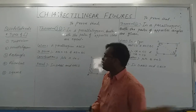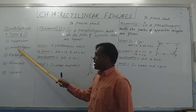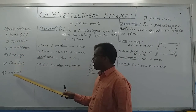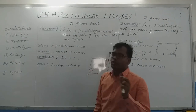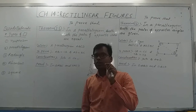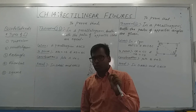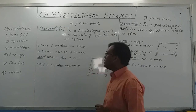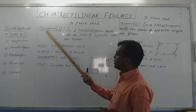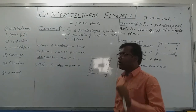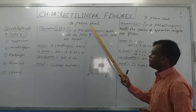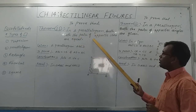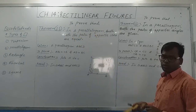The types of quadrilaterals are: trapezium, parallelogram, rectangle, rhombus, and square. Please try to recall these once again through your book. Then start theorem number 11 — to prove that in a parallelogram, both pairs of opposite sides are equal.